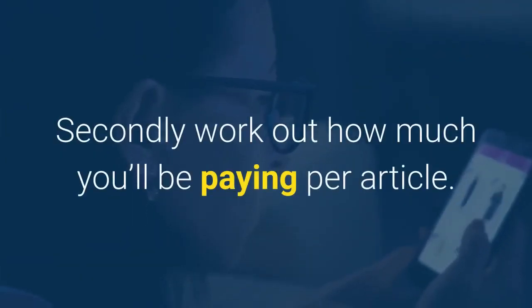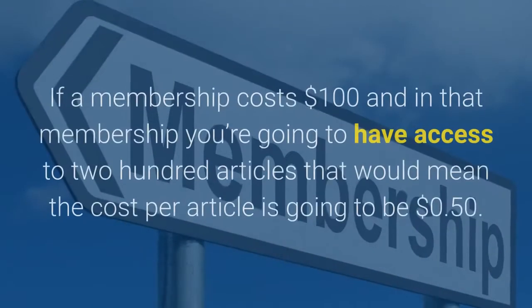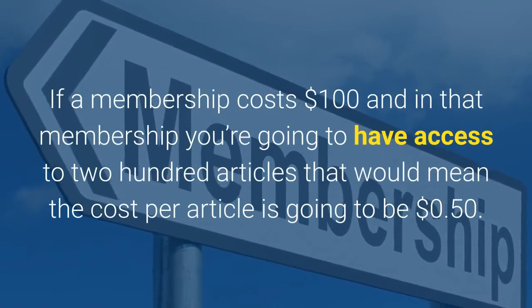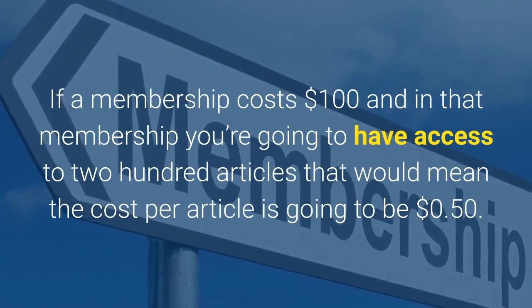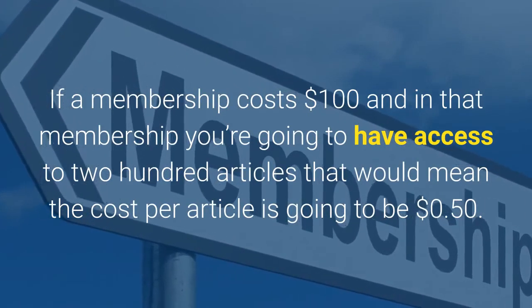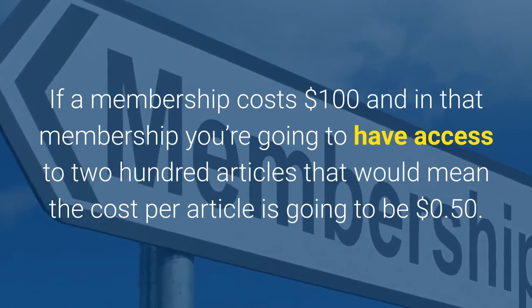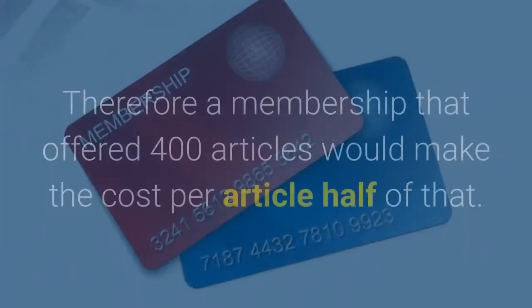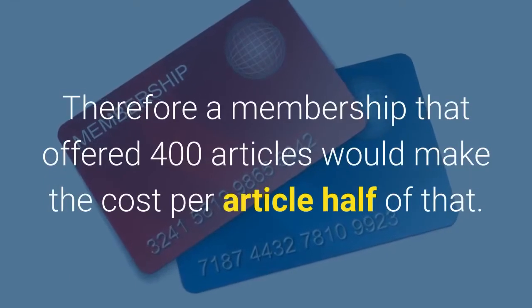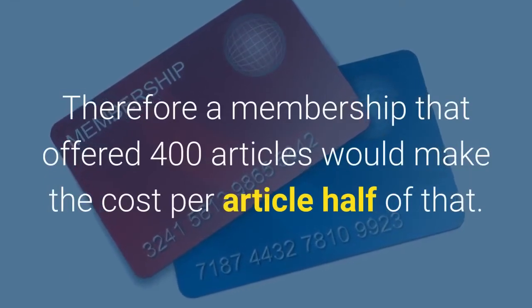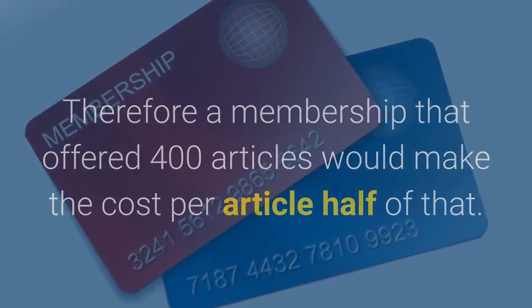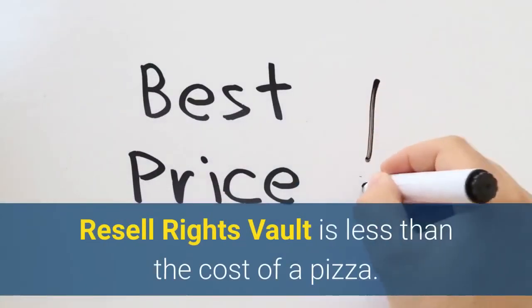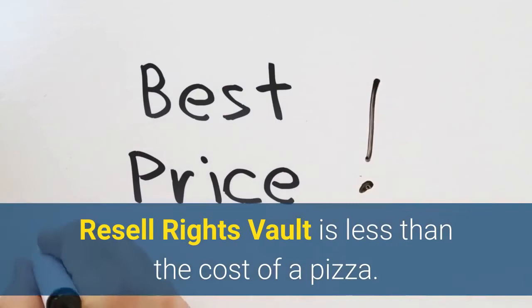Secondly, work out how much you'll be paying per article. If a membership costs $100 and gives you access to 200 articles, then the cost per article is going to be 50 cents. Therefore, a membership that offered 400 articles would make the cost per article half of that. Resell Rights Vault is less than the cost of a pizza.